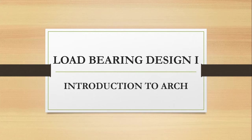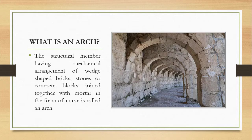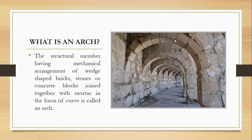Today our topic of discussion is arches and the types of arches used in different types of buildings when these arches act as a load-bearing structure. An arch is basically a structural member having a mechanical arrangement of wedge-shaped bricks, stones, or concrete blocks joined together with mortar that form a curve. An arch does not necessarily have to be a curved one — it can be flat and horizontal as well.